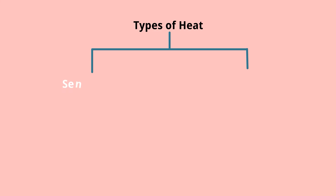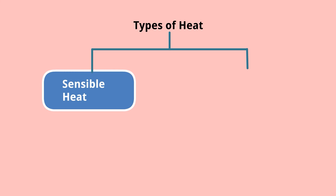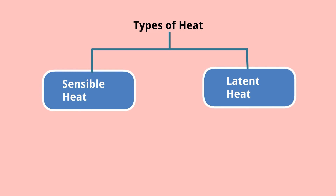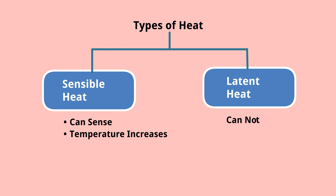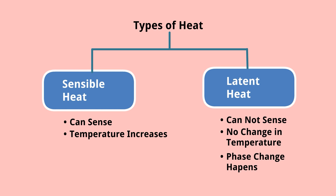Types of heat: there are basically two types — sensible heat and latent heat. Sensible heat means you can sense the heat, and the temperature increases. Latent heat you cannot sense, and there is no change in temperature — but a phase change happens. In sensible heat, there is no phase change.